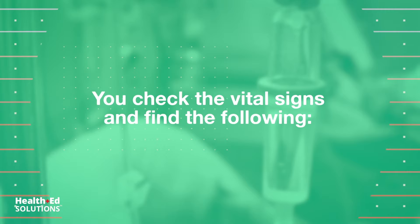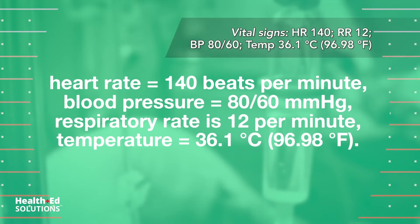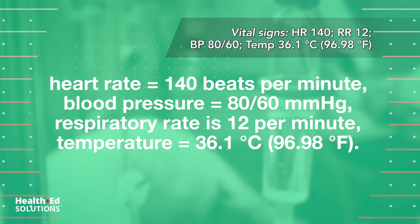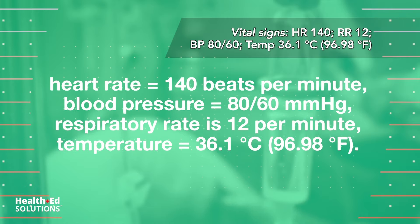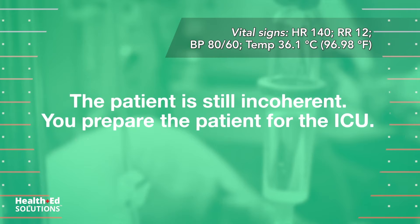You check the vital signs and find the following: heart rate equals 140 beats per minute, blood pressure equals 80 over 60 millimeters of mercury, respiratory rate is 12 per minute, temperature equals 36.1 degrees Celsius. The patient is still incoherent. You prepare the patient for the ICU.